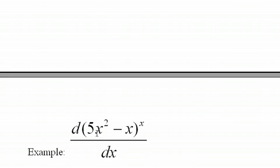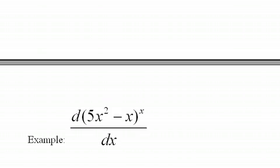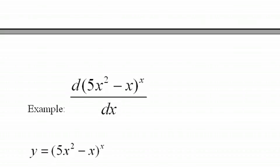And we'll have an example of that right here. The derivative of a polynomial to the x power. And both of these functions, both f and the power you raise it to, are not constants. And so the first step when you do logarithmic differentiation is you write it as y equals f to the g of x here, or 5x squared minus x to the x power.